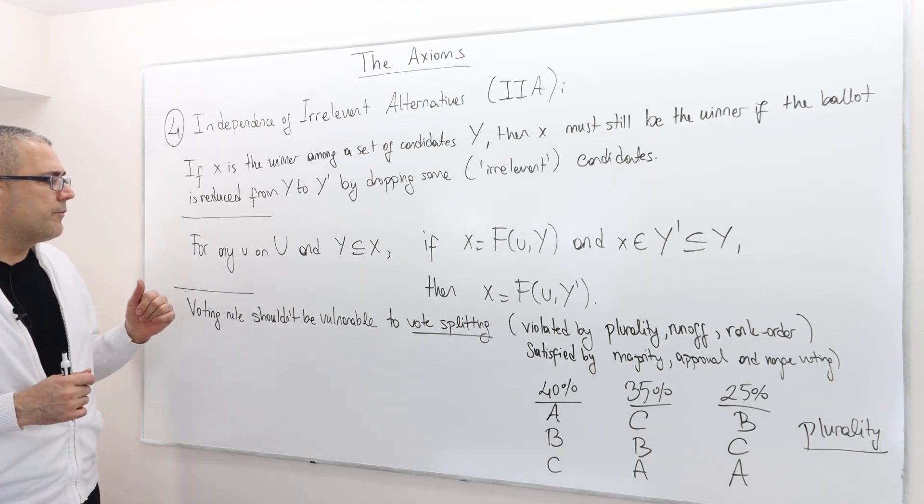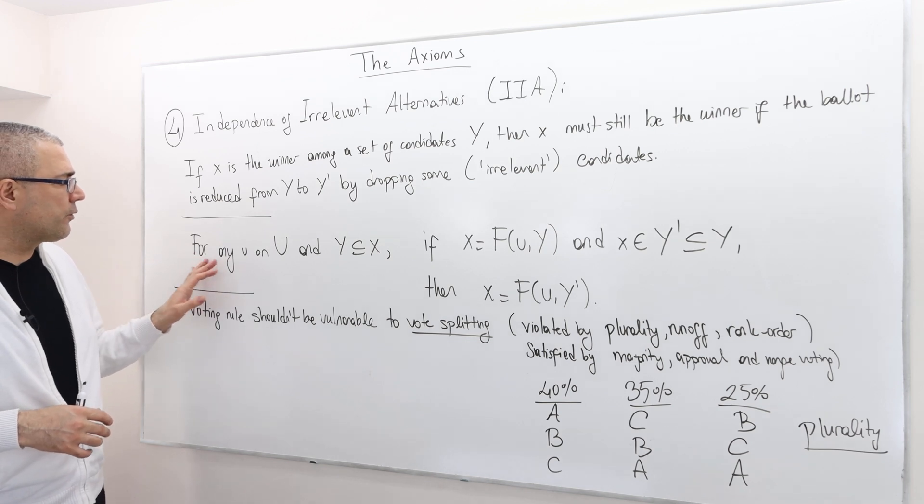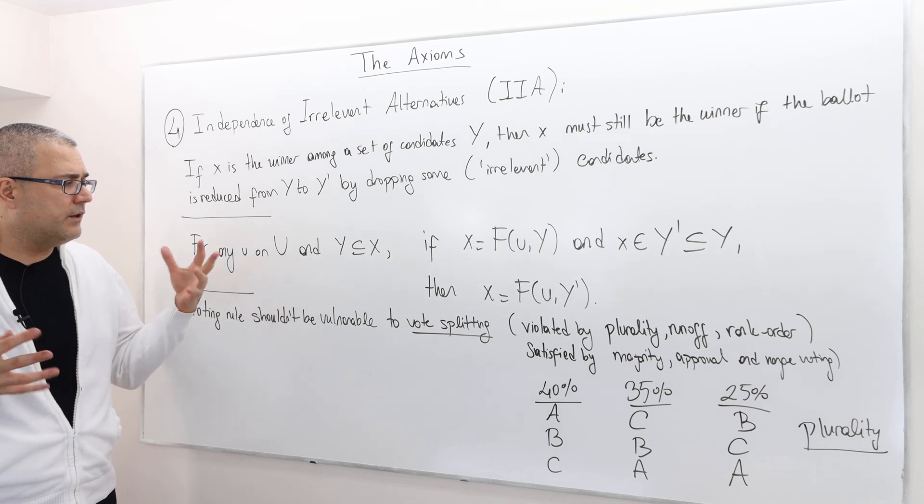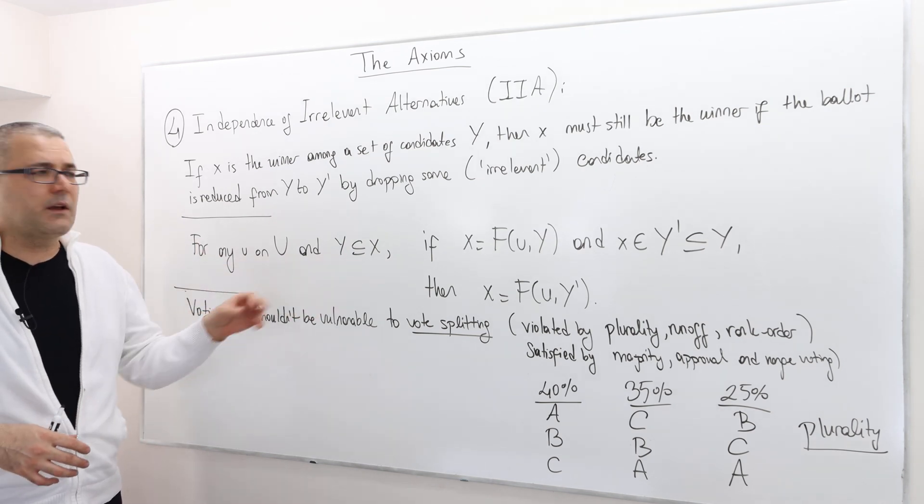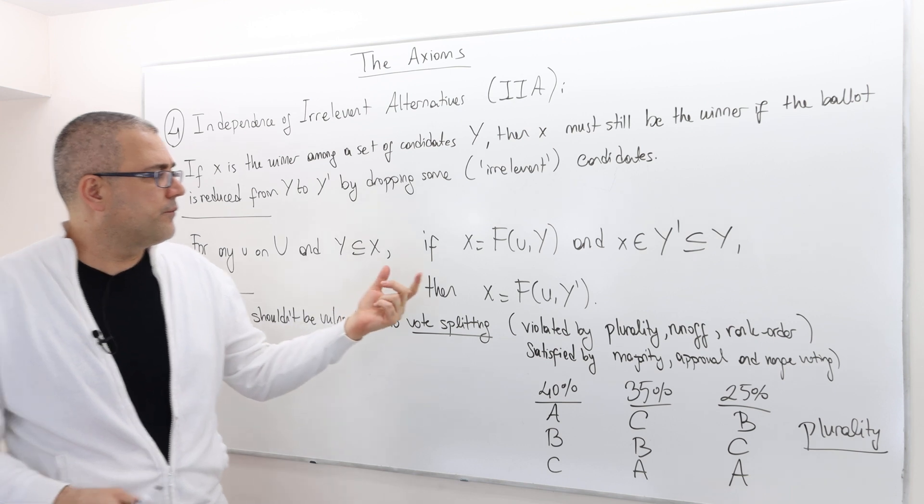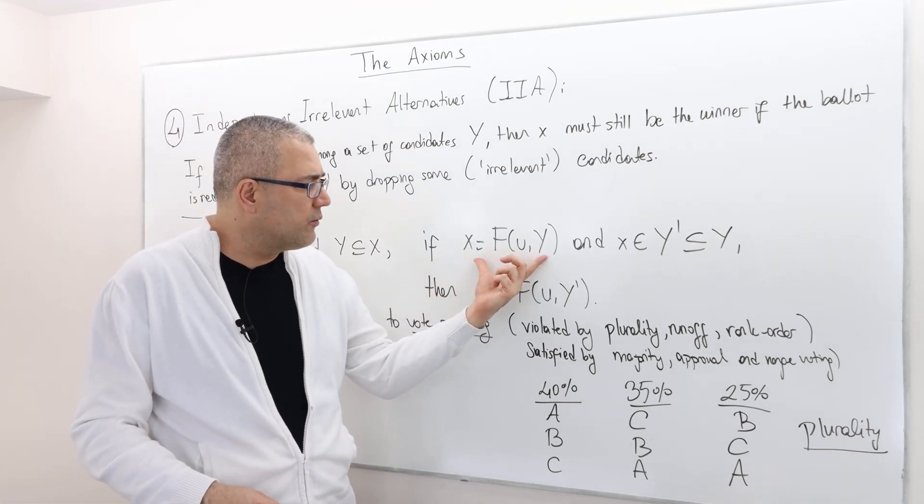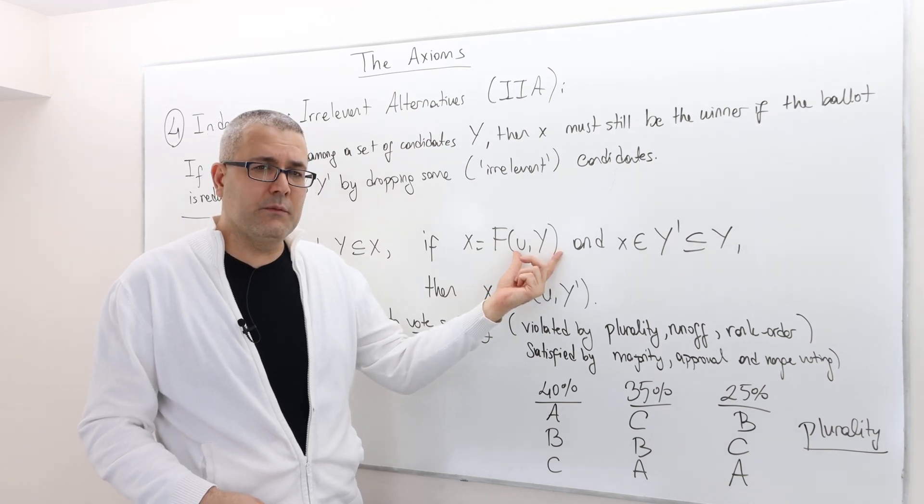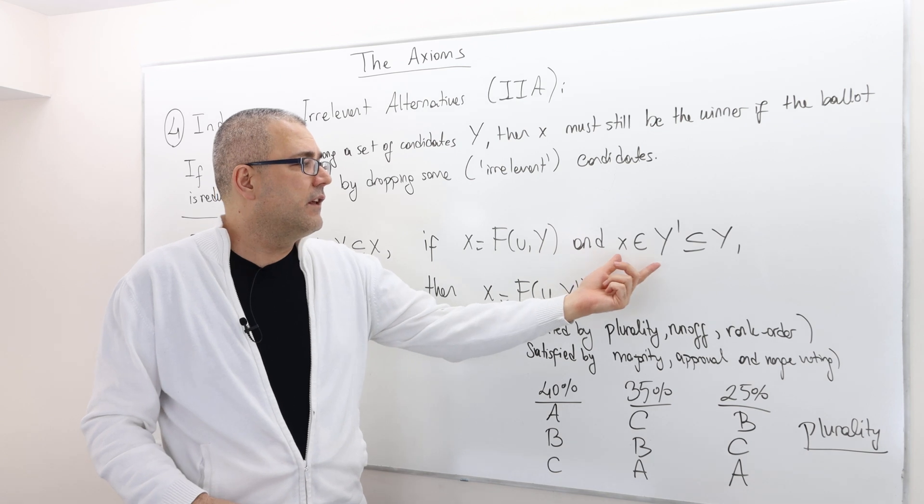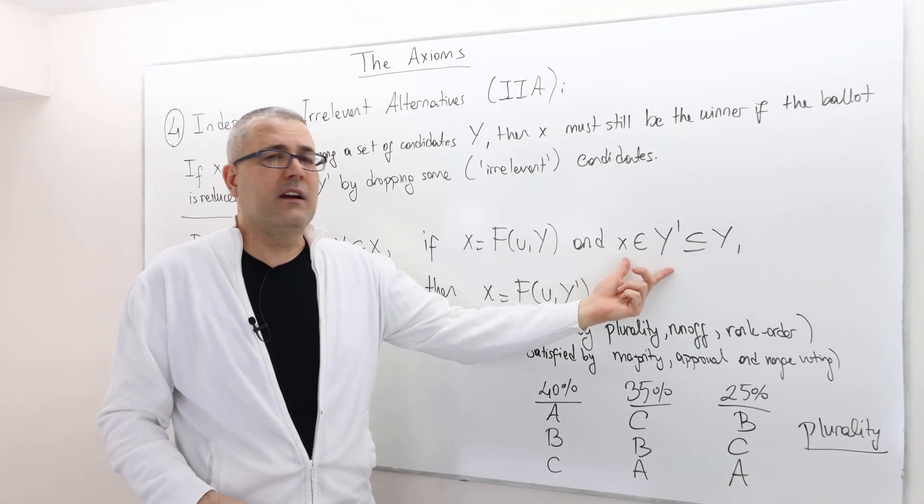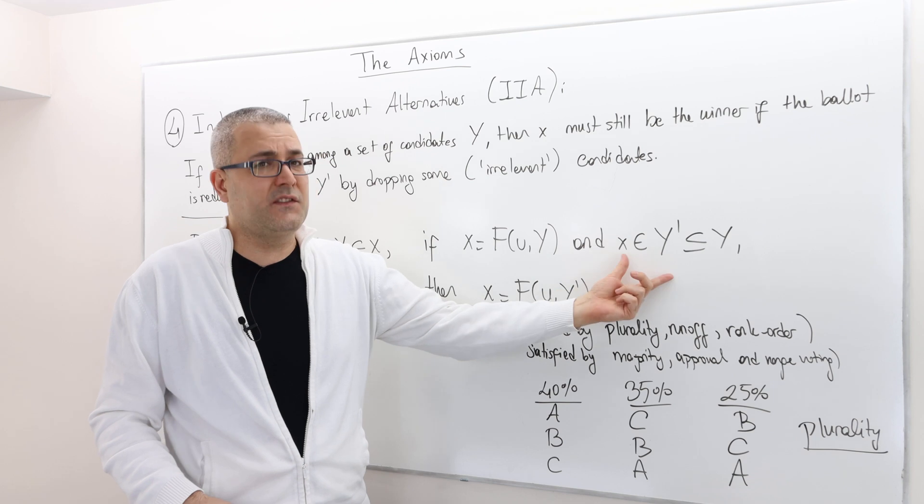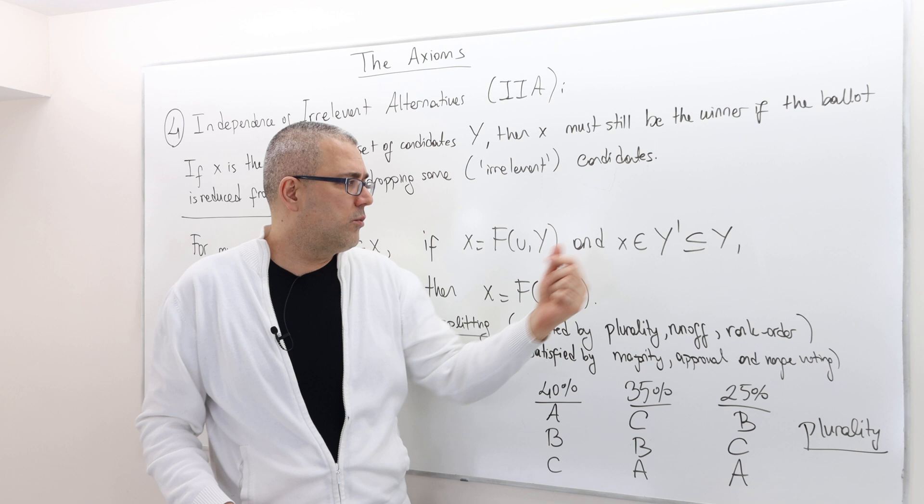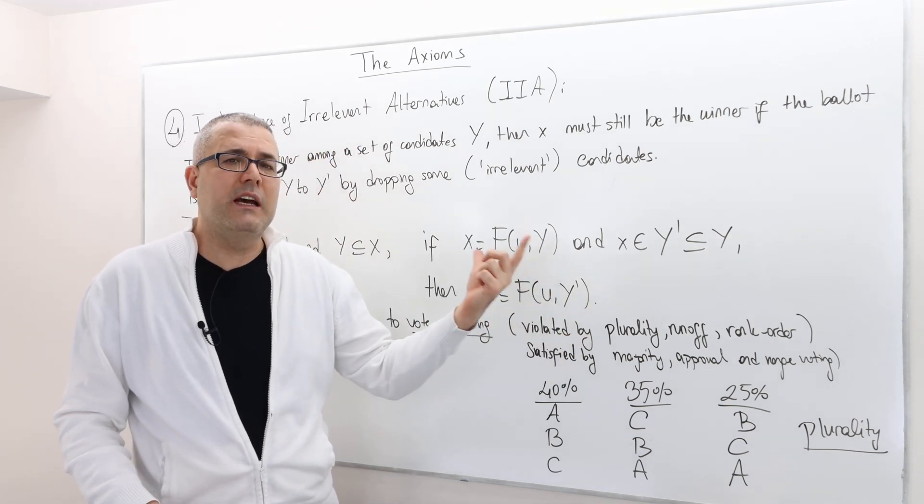So what is the formal description? For any preference profile, small u, on our restricted domain U, and for any subset of X, Y, if the candidate X is chosen at that profile while the set of available candidates was Y, and if we consider another set of candidates, Y prime, where X is still in the set, obviously, but Y prime is a subset of Y, then X should still be elected.